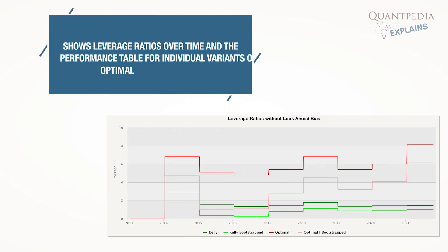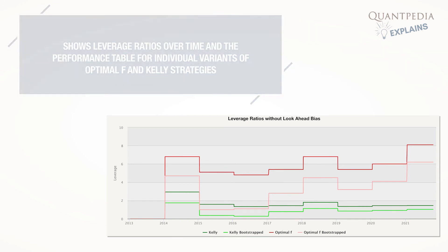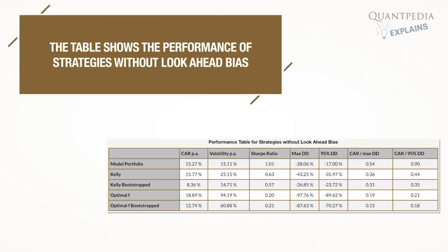The last fourth chart shows leverage ratios over time, and the performance table covers individual variants of Optimal F and Kelly strategies. The table shows the performance of strategies without look-ahead bias.